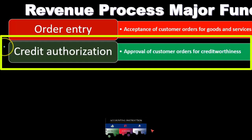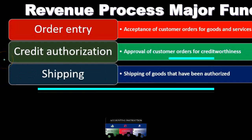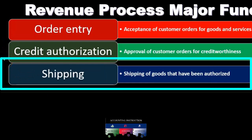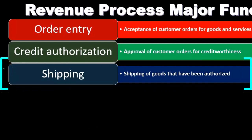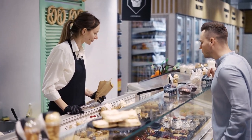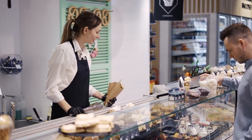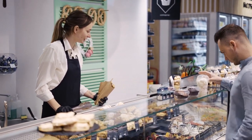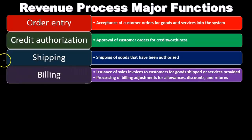So we're going to ask, is this customer creditworthy? Then we have the shipping — shipping of goods that have been authorized. Once the goods have been authorized, we'll have the shipping process, shipping goods that have been ordered and where the customers have had credit worthiness verified.